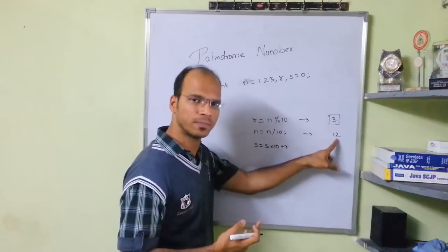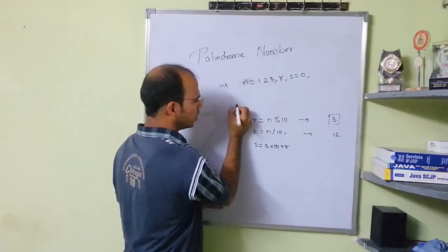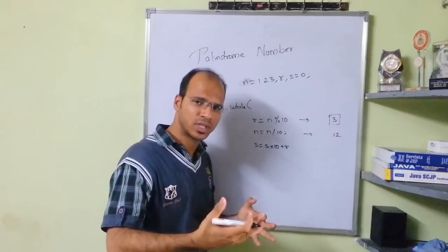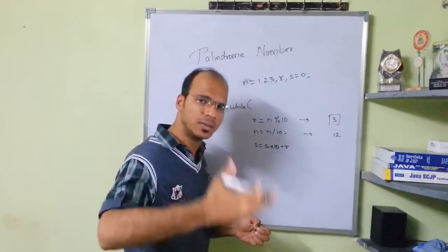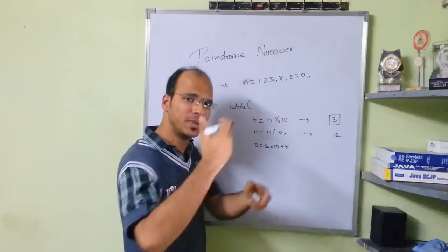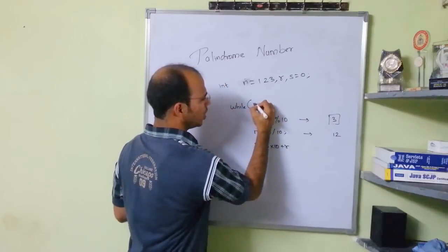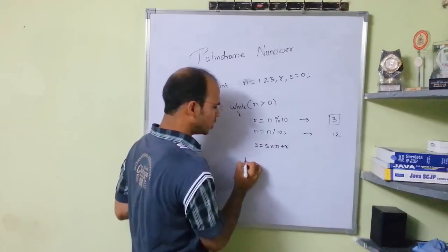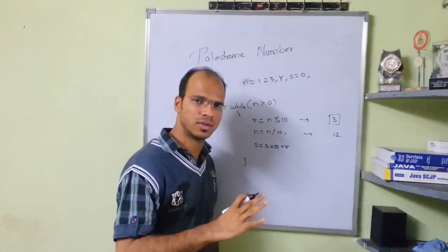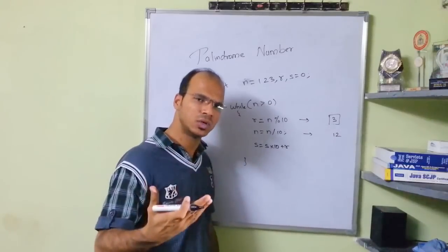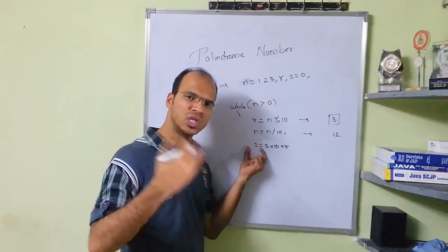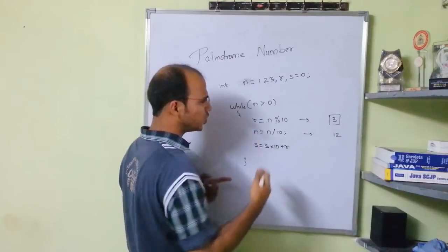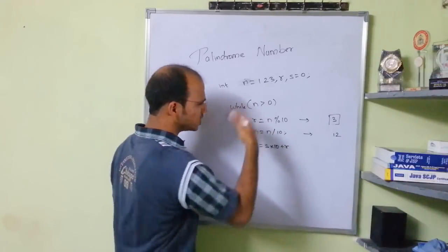You have to repeat this process for each digit using a while loop. The condition is: repeat the loop while n is greater than 0. Once n becomes 0, you stop — because at that point you've already built the full reverse number.